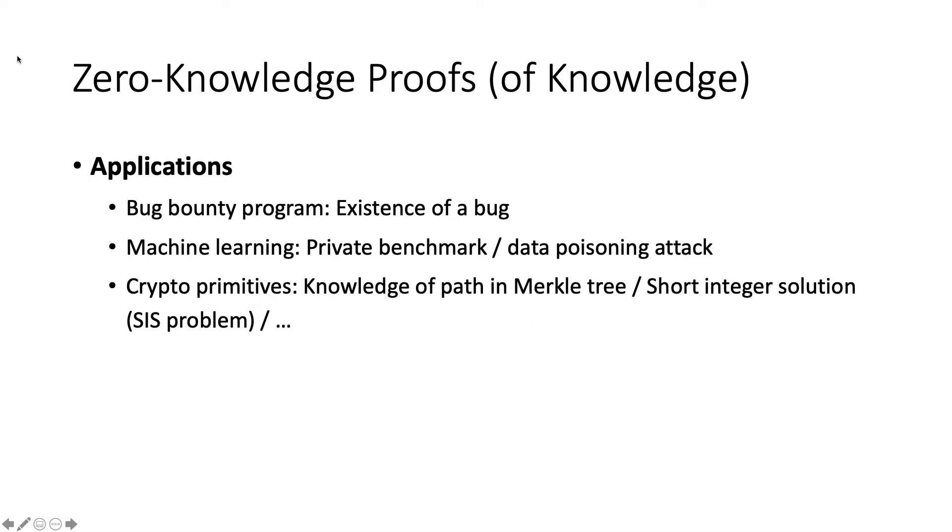There are many interesting applications of zero-knowledge proofs. For example, it can be used in a bug bounty program for a researcher to prove the existence of a bug in zero-knowledge before getting a reward. For machine learning settings, it can be used to do private benchmarks with either private dataset or private model, or to demonstrate data poisoning attacks with some private dataset. Also, the zero-knowledge proof protocol can be used for some cryptographic primitives, for example, to prove the knowledge of a path in the Merkle tree or to prove secrets for a short integer solution problem.